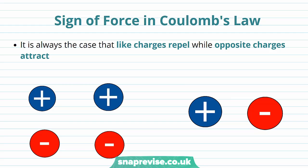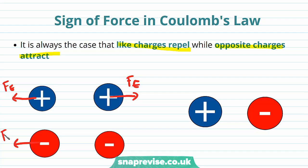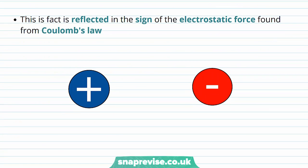Now we're going to look at the sign of the force in Coulomb's law. It's always the case that like charges repel while opposite charges attract. For example, two positive charges will experience an electrostatic force of repulsion, and so will two negative charges. However, opposite charges are going to be attracted to each other. This fact is reflected in the sign of the electrostatic force found from Coulomb's law.